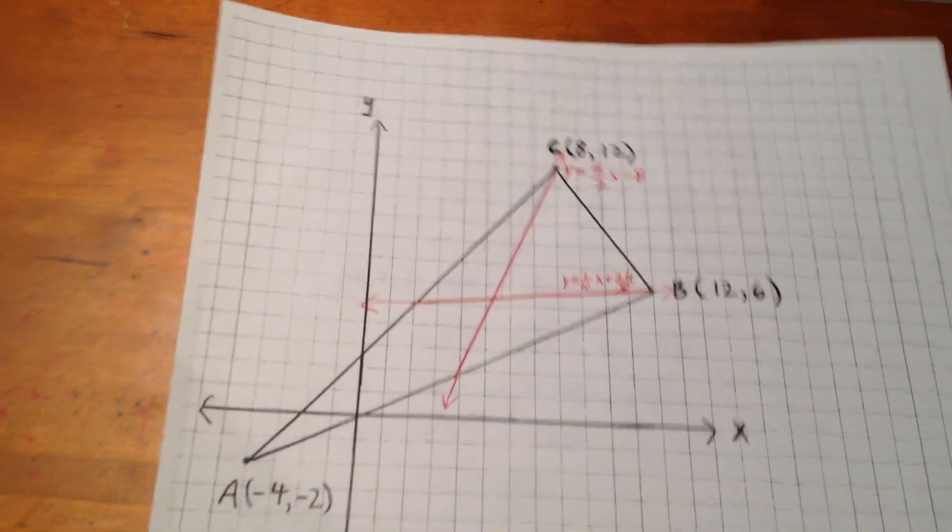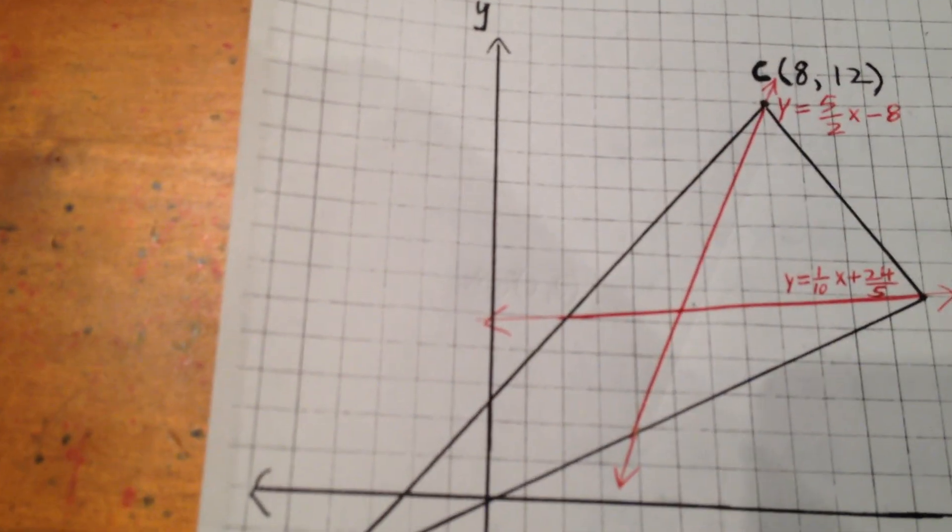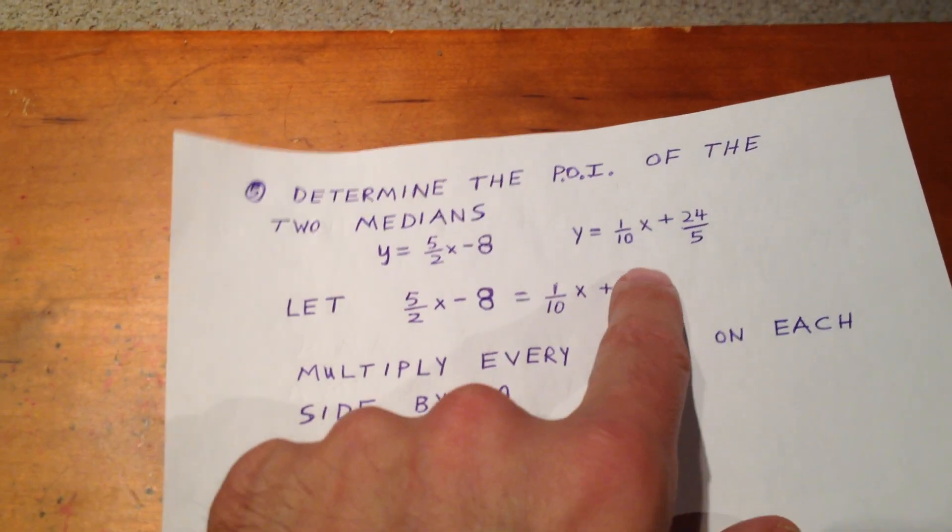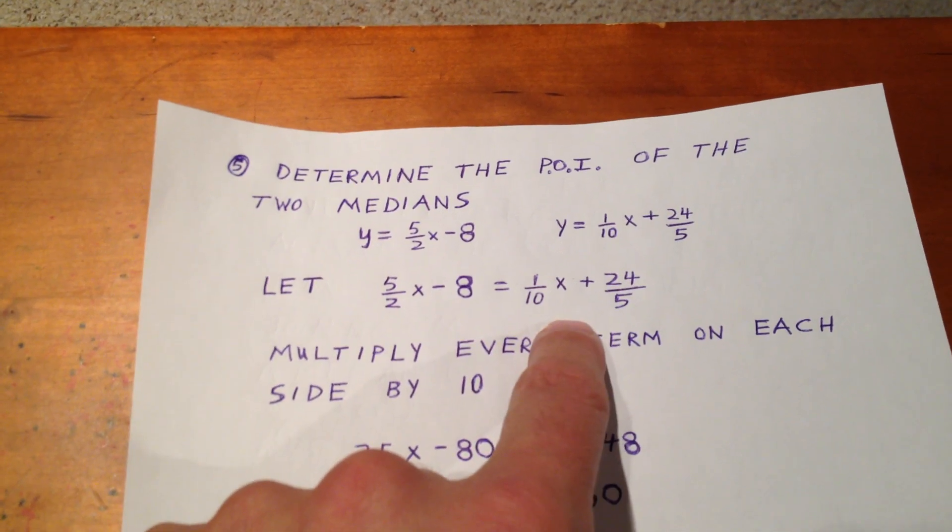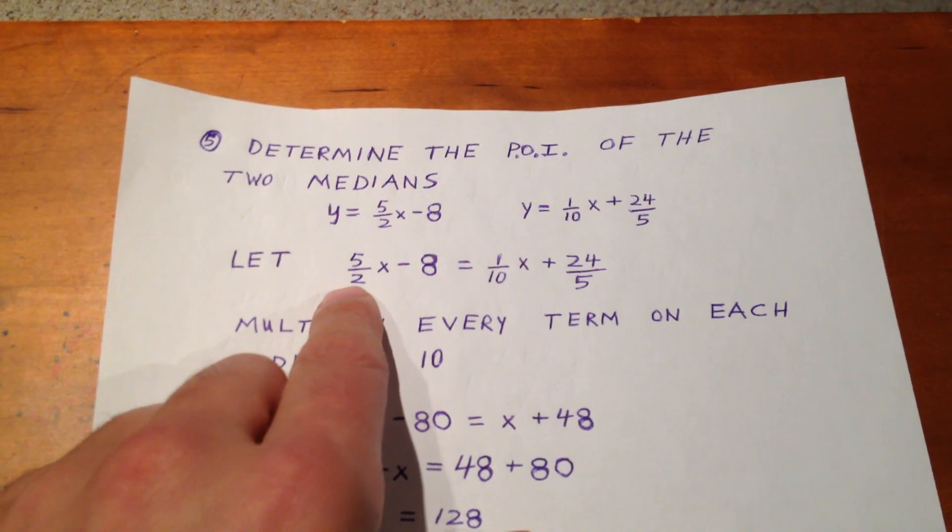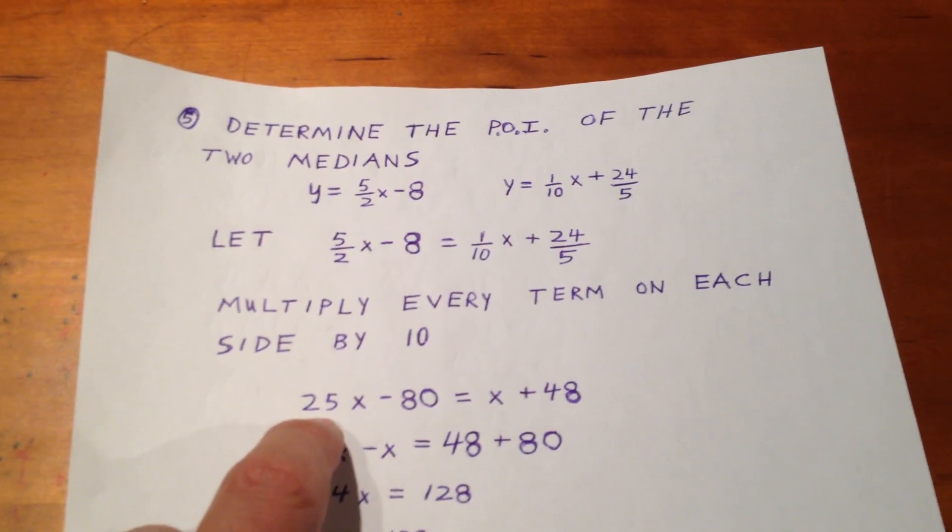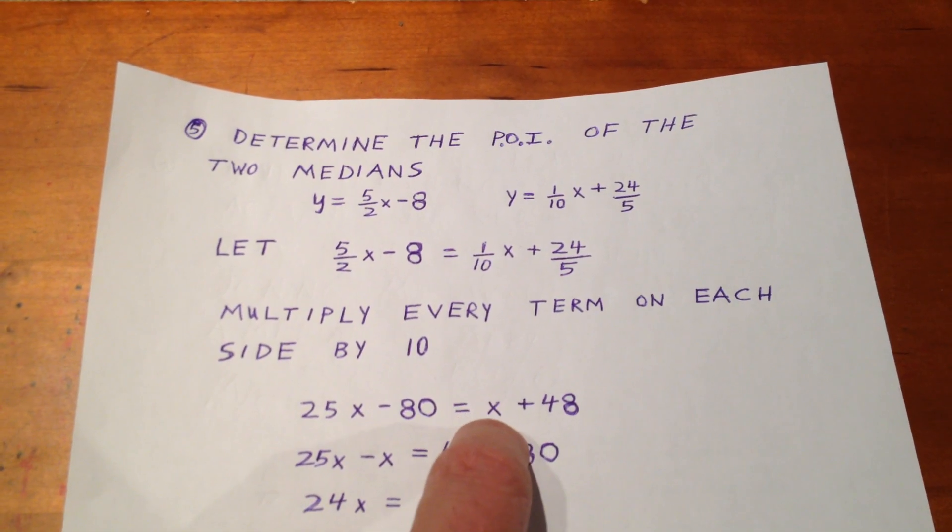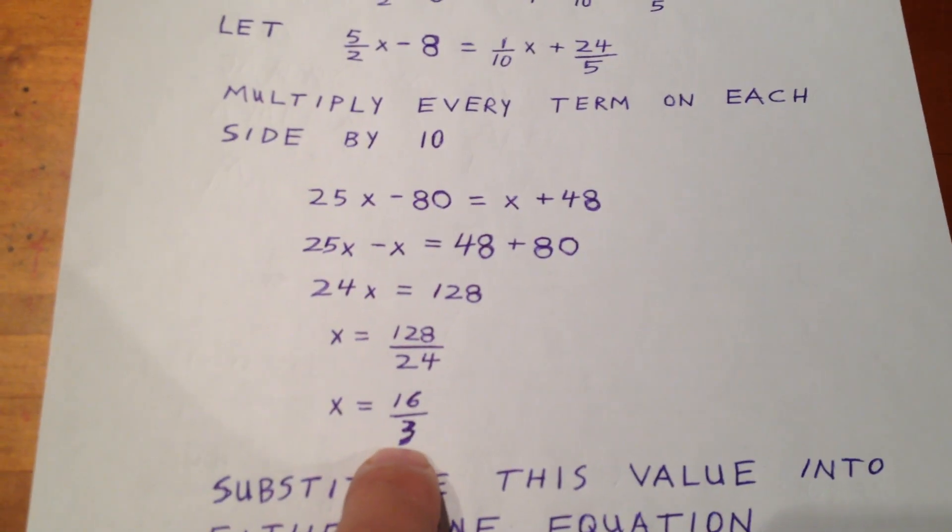At that point, we see that we've got two medians, one here and one here. And our job is simply to find that point of intersection right there. The way we do that is to determine the point of intersection using the method of substitution in this case. Since we have both of the equations in the form y equals mx plus b, we'll simply let the x expressions equal each other. There we go. Because we have a lowest common denominator of 10, it's convenient to multiply every term on each side by 10. So, 10 times 5 halves is 25, 10 times 8 is 80, 10 times 1 tenth is 1, and 10 times 24 over 5 is 48. We now have integers, and we get that x is equal to 16 over 3.